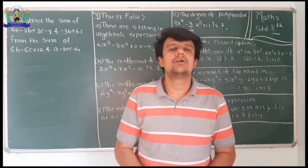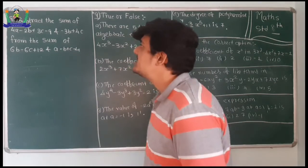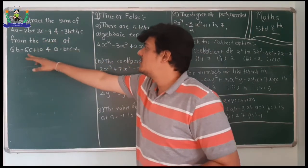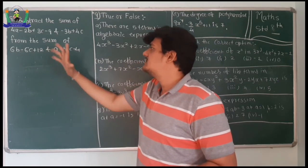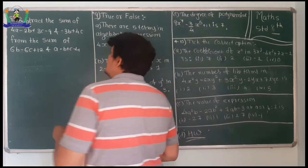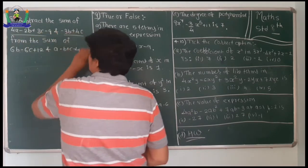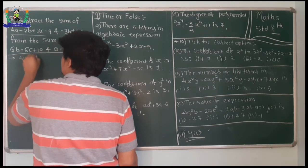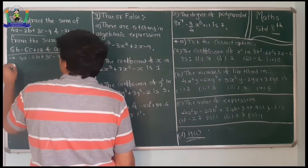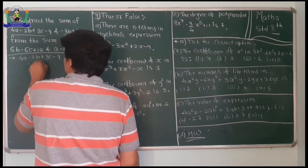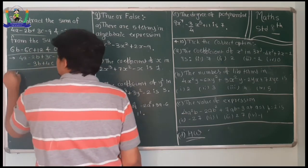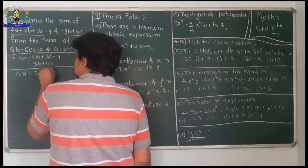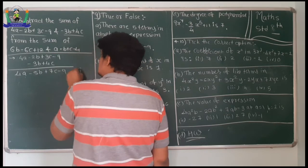Now the next question: subtract the sum of (4a minus 2b plus 3c minus 9) and (minus 3b plus 4c) from the sum of (6ab minus 6c plus 12b) and others. First we find Sum 1: 4a minus 2b plus 3c minus 9 plus minus 3b plus 4c, which simplifies to 4a minus 5b plus 7c minus 9.